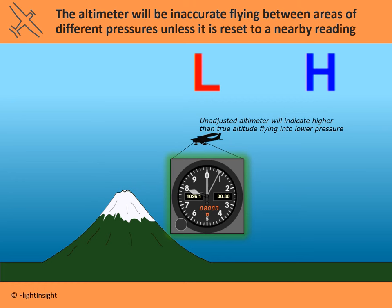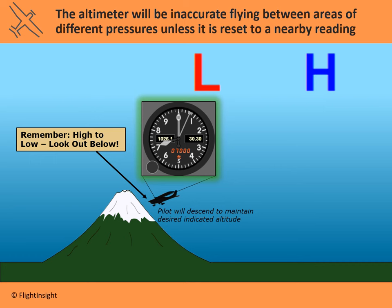The aircraft goes from indicating 7,000 feet to indicating 8,000 feet just because the outside air pressure has changed and the altimeter hasn't been adjusted. What the pilot may do by accident is try to maintain that desired 7,000 feet altitude and end up descending. The pilot thinks they've gone from 7,000 to 8,000 feet, so they try to return to 7,000 feet, causing the aircraft to be lower than the pilot thinks. There's a memory aid for this: 'high to low, look out below.'